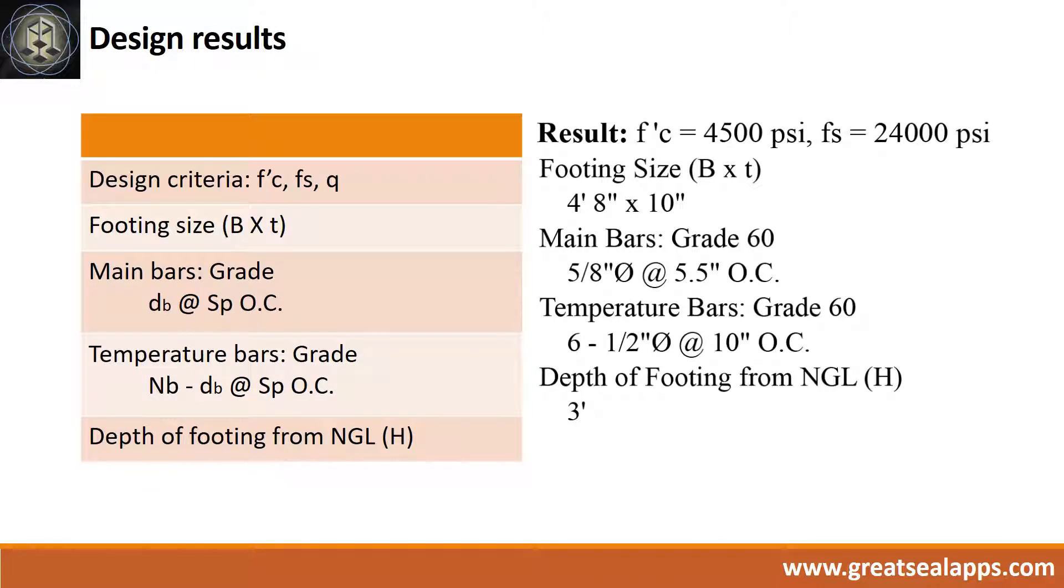Design results are as follows: f'c equals 4,500 PSI, fs equals 24,000 PSI. Footing size is 4 feet 8 inches by 10 inches. Main bars of grade 60: 5/8 inch diameter bar at 5.5 inches on center. Temperature bars of grade 60: 6 pieces 1/2 inch diameter bar at 10 inches on center. Depth of footing from natural grade line, 3 feet.